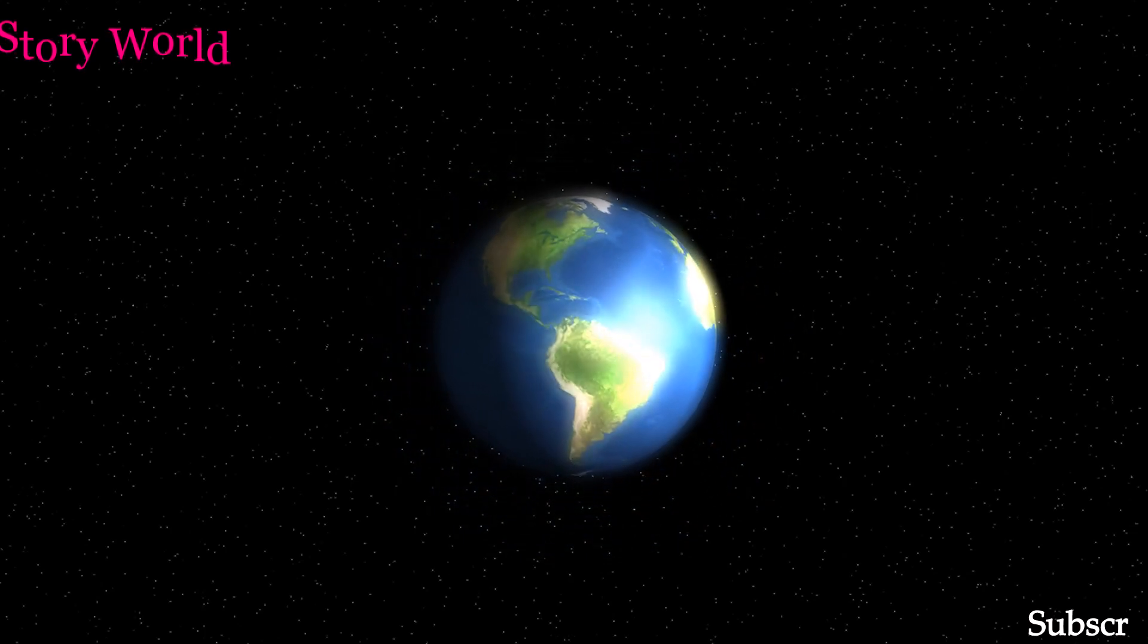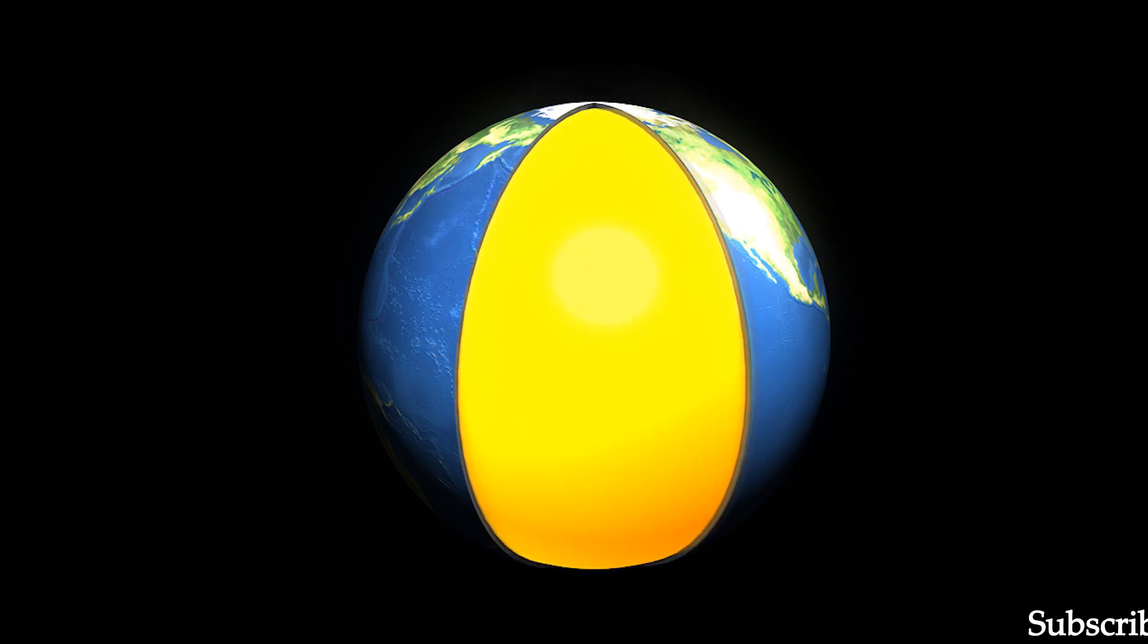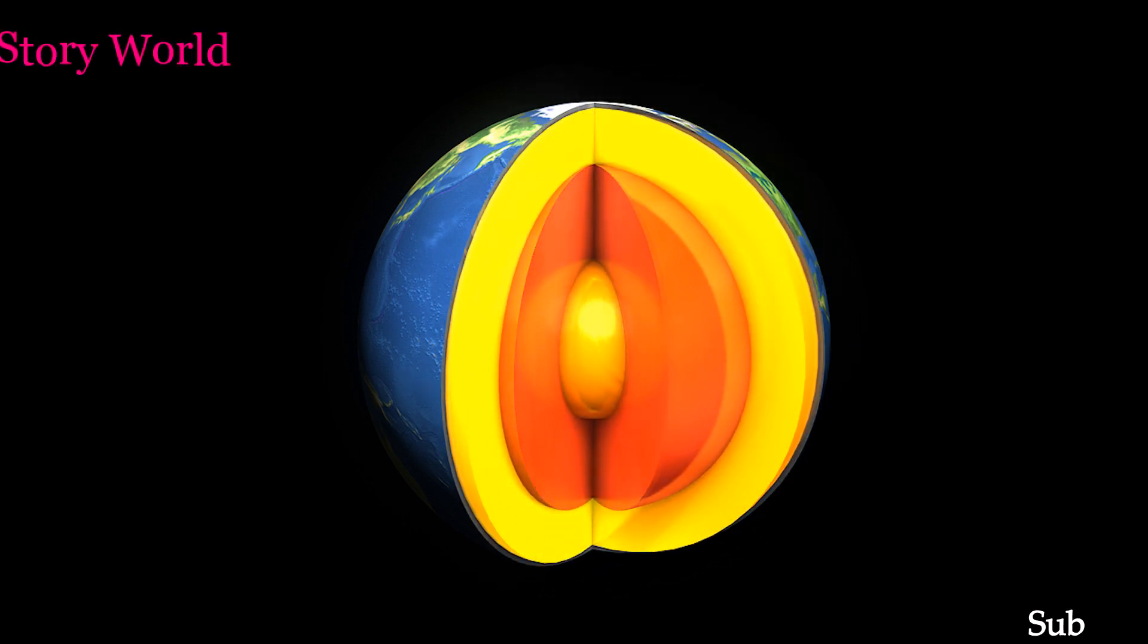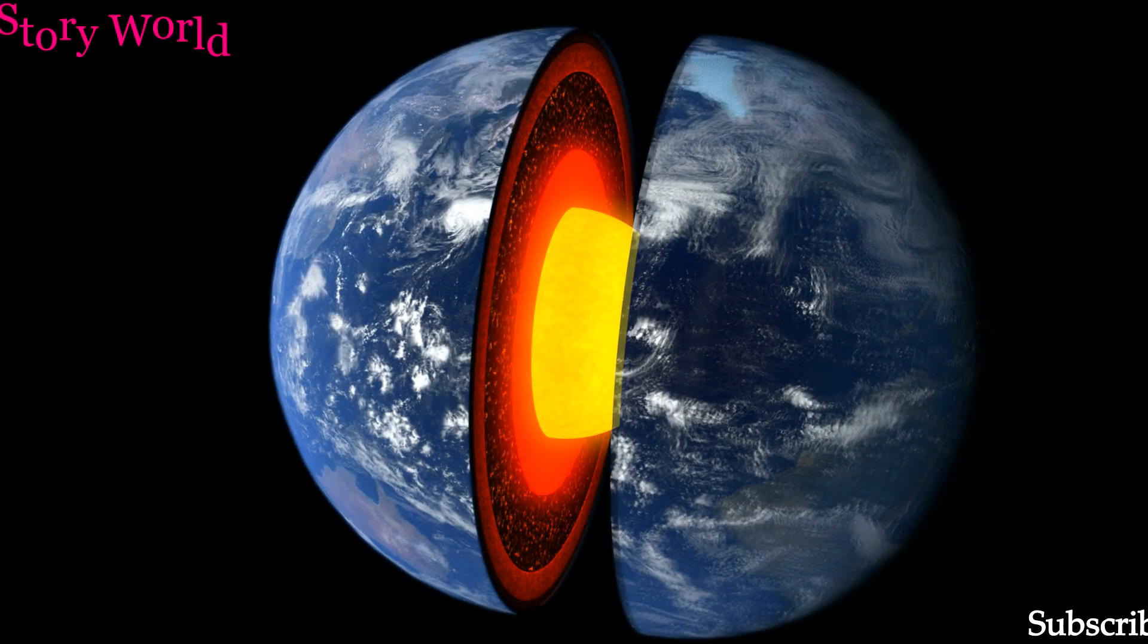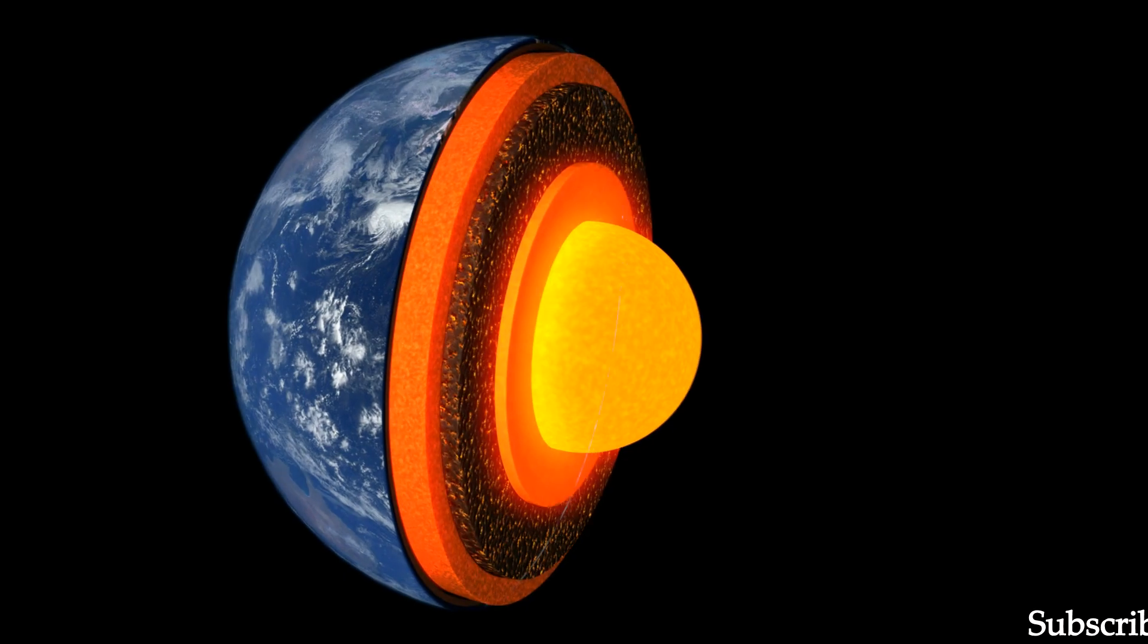The magnetic field of the Earth is mainly generated in the core. Earth's rotation and the presence of iron in the Earth's core are the main factors that create a magnetic field.